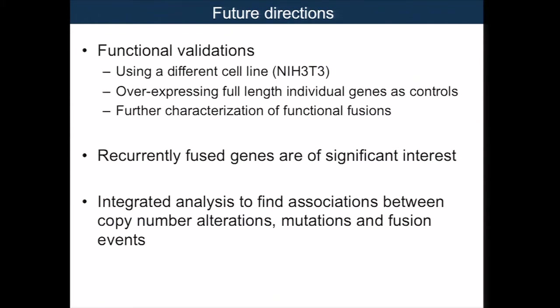In summary, we're repeating these assays in NIH3T3 cells and overexpressing full-length individual genes as controls, followed by further functional validations and analysis. Another thing to note is that recurrently fused genes — not the fused gene pairs, but the individual genes — are also interesting. Finally, integrating this analysis with copy number alterations, mutations, and fusion events is of significant interest, looking at the bigger scale of genomic instability and what drives these alterations.